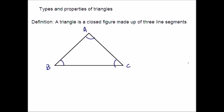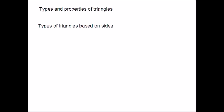We can divide the triangle into three types based on sides and three based on angles. Let me explain each type one by one. Based on the sides, we can see three types of triangle: equilateral triangle, isosceles triangle, and scalene triangle.